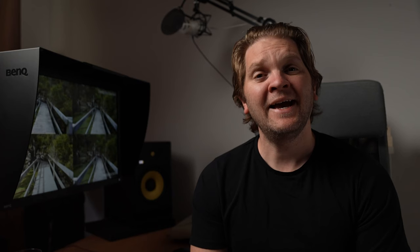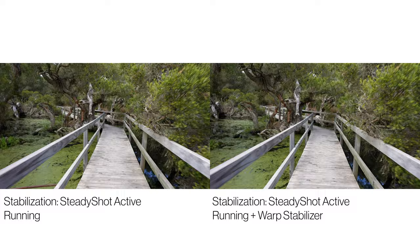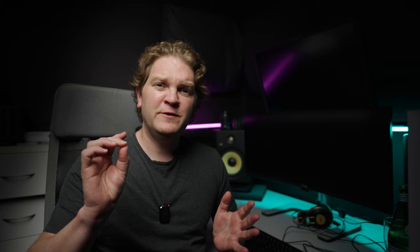Let's have a look at some side-by-side examples of the running test. Check out how good the active and gyro stabilisation is here. And as a bonus example, take a look at this version where I've added extra stabilisation in post using warp stabiliser in Premiere Pro — notice how it smooths out things a bit more, but it also does crop in a bit more as well.